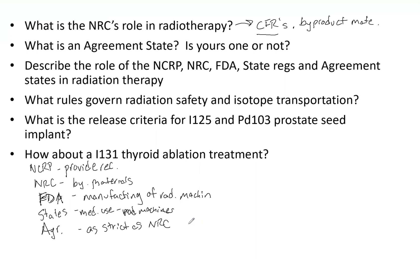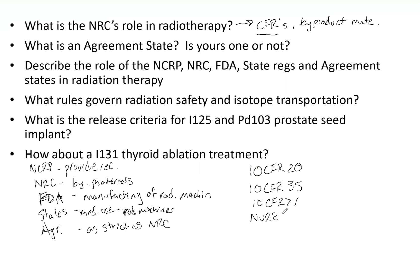The important CFRs governing radiation safety and isotope transportation are 10 CFR 20, 10 CFR 35, 10 CFR 71, and NUREG 1556. 10 CFR 20 covers the standards of radiation protection — that's where you get your dose limits and things of that nature.